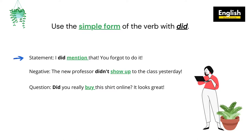In statements, you say: 'I did mention that. You forgot to do it.' When you do that, you actually do it for emphasis, but because you see 'did,' your verb is used in the simple form. In the negative form: 'The new professor didn't show up to the class yesterday' — because you have 'didn't,' 'show up' is simple. And in the question form: 'Did you really buy this shirt online? It looks great.' As you can see, because of 'did,' your verb is in the simple form.